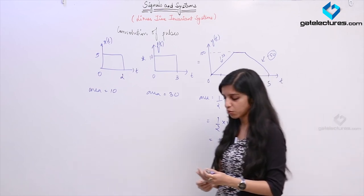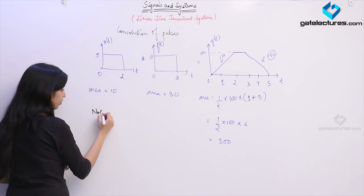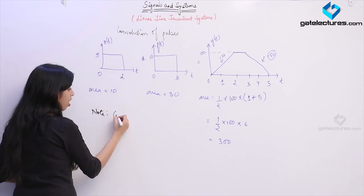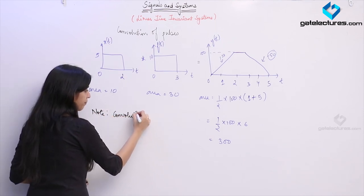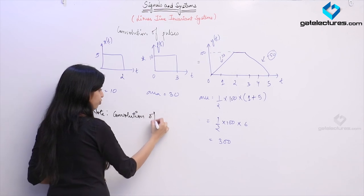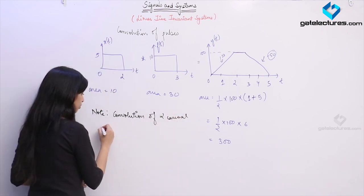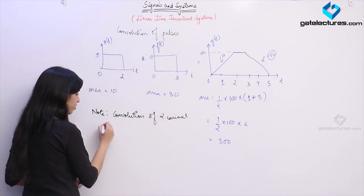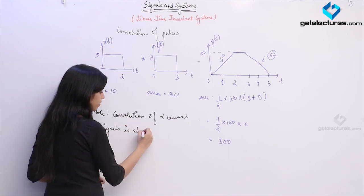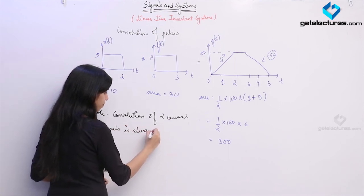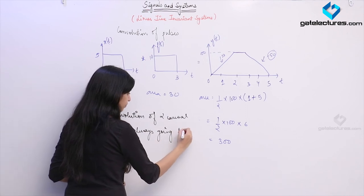One more important thing to note: convolution of two causal signals is always going to be a causal signal.